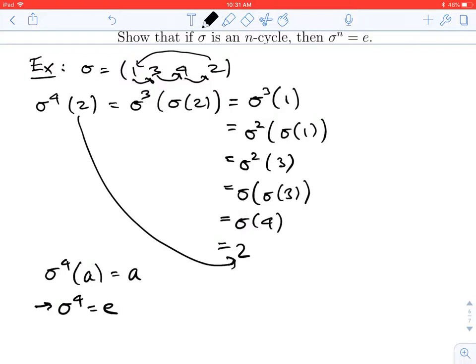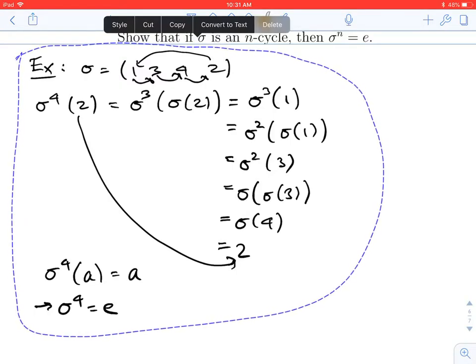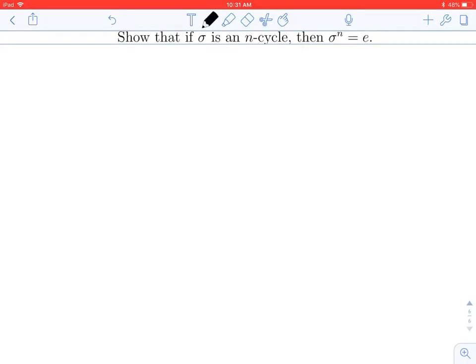And so that sigma to the fourth is equal to the identity map. All right. Well, that's not a proof of the general case. That's just a specific example. So let's see what happens when we try to apply it in general. So we're going to want a little bit of notation. And you're going to see why in a second. So let's say my general permutation has, well, it's going to have n numbers. And I'm going to label them.